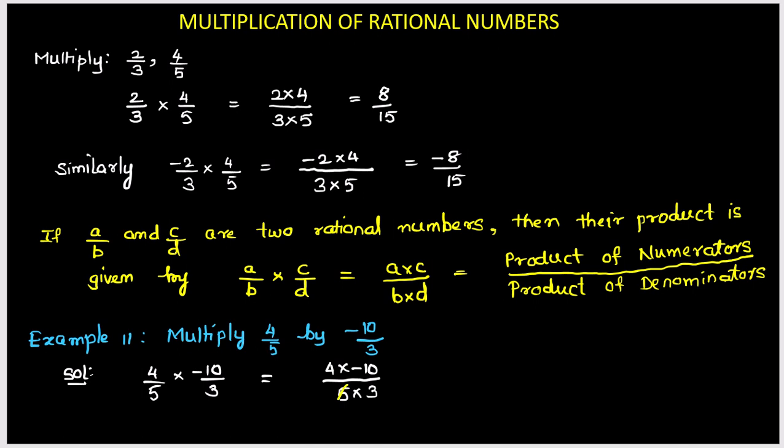So you get 4 multiplied by—symbol already minus is there—minus, we have got 2 upon 1 into 3. Ultimately you get the final answer: plus into minus, minus, 4 times 2 are 8 upon 1 times 3 are 3. So this is the product of 4 by 5 and minus 10 by 3.